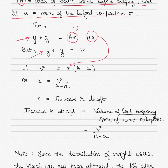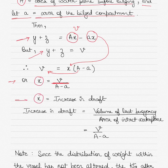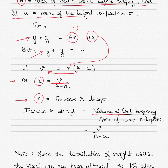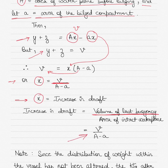Therefore X, the increase in draft, equals V divided by (A minus a). Here, A minus a represents the area of the intact water plane — the water plane area not affected by bilging. So the increase in draft equals the volume of lost buoyancy divided by the area of the intact water plane.